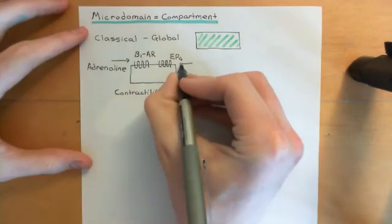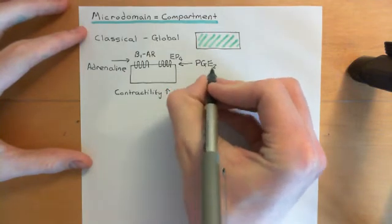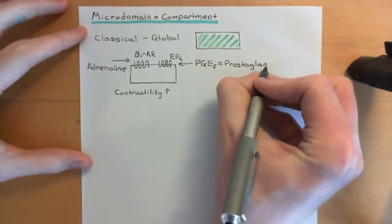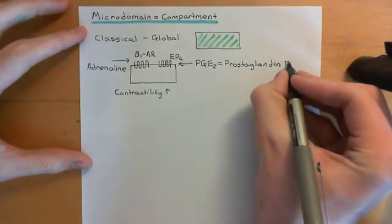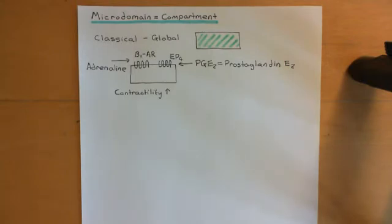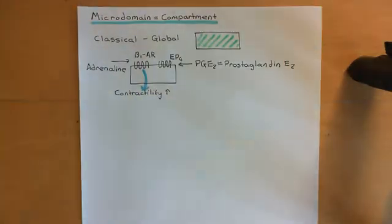Activation of the beta-1 adrenergic receptor causes contractility to go up. The EP4 receptor is a receptor for prostaglandin E2 (PGE2) — it's the type 4 receptor for prostaglandin E2. When you activate the EP4 receptor, it activates the exact same cascade: it activates the GS cascade, it activates adenylyl cyclases, you get cyclic AMP being produced — but you do not get an increase in contractility.